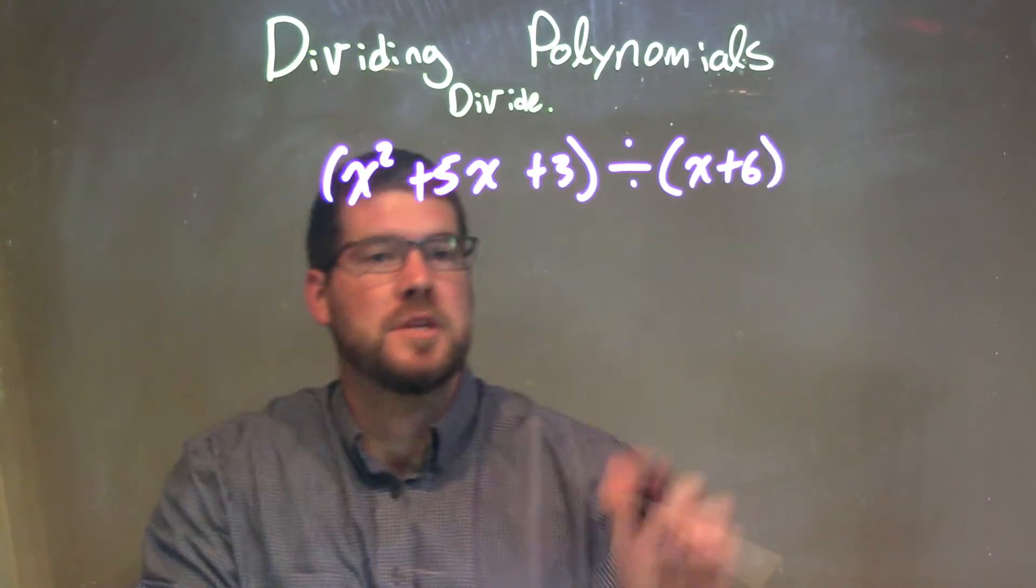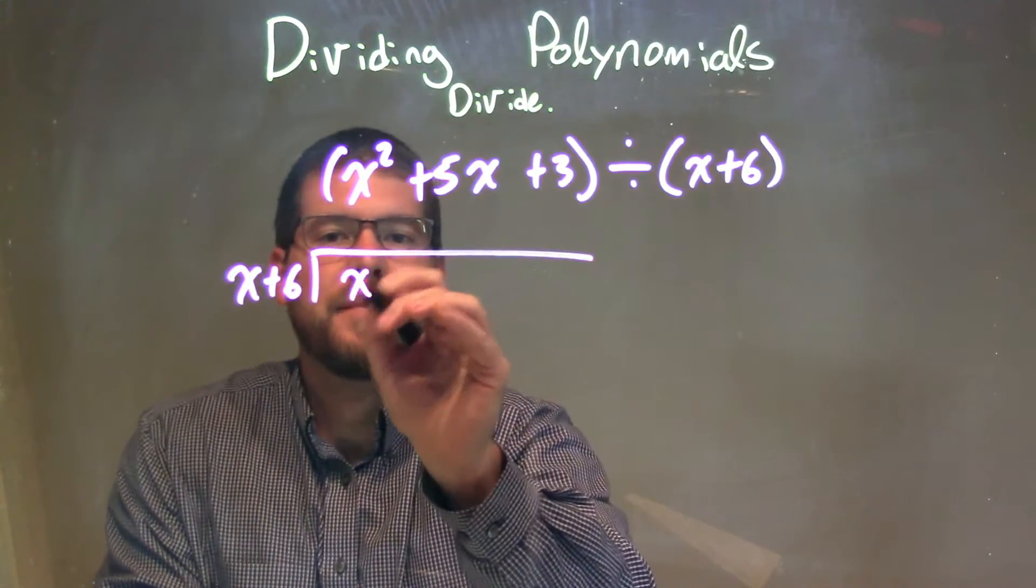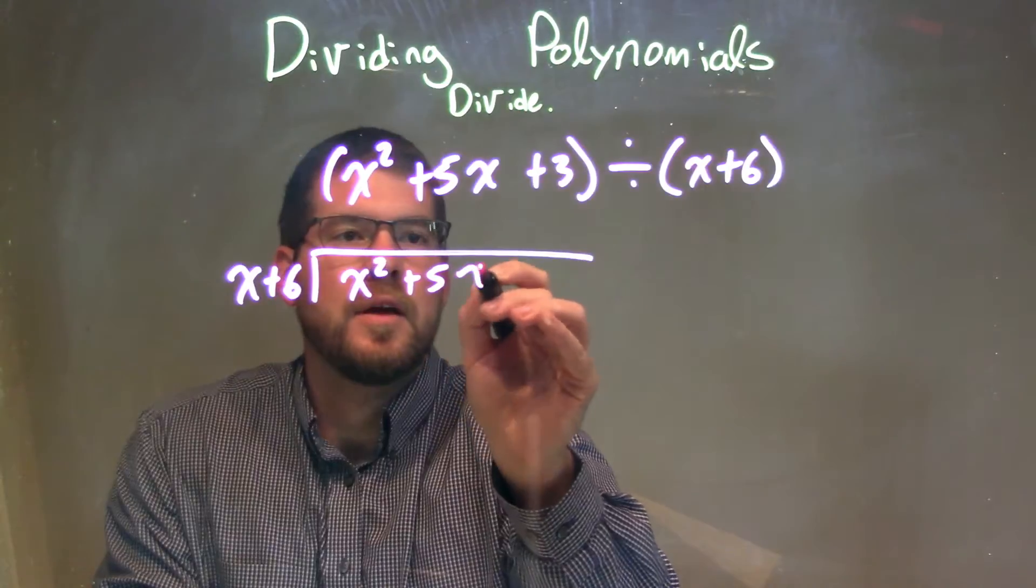Well, I'm going to apply my long division here, so I'm going to write x plus 6 on divisor. And I'm going to have it go into my dividend, x squared plus 5x plus 3.